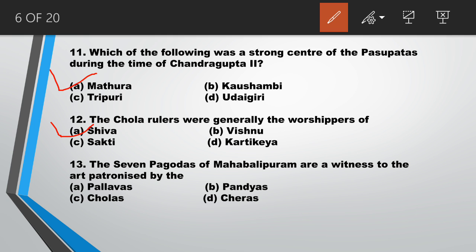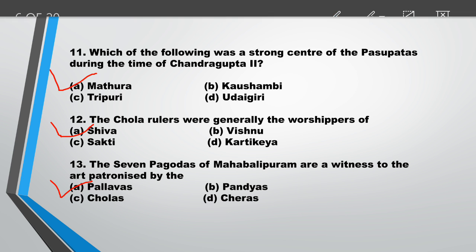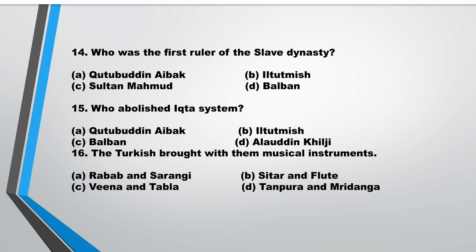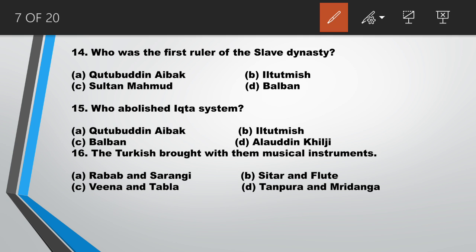Question number 14: who was the first ruler of the Slave Dynasty? Answer is A, Qutbuddin Aibak. Question number 15: who abolished the Iqta system? Answer is B, Qutbuddin Aibak.